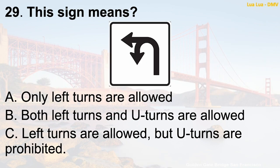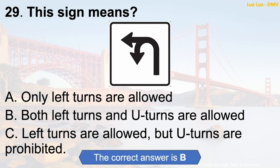Question 29: This sign indicates — A. Only left turns are allowed. B. Both left turns and U-turns are allowed. C. Left turns are allowed but U-turns are prohibited. The correct answer is B: Both left turns and U-turns are allowed.